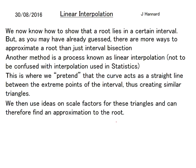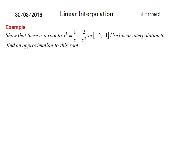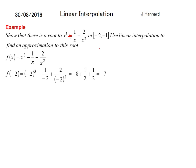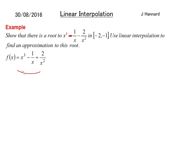So: show that there's a root to f(x) = x³ minus 1/x minus 2/x² in the interval [-2, -1], and use linear interpolation to find an approximation to this root. Sorry about any confusion - that should be a minus sign. That's our function, so let's proceed.